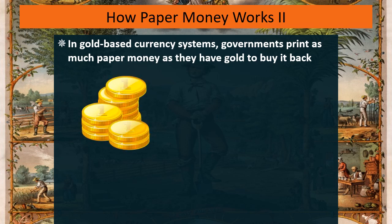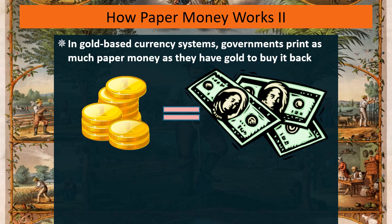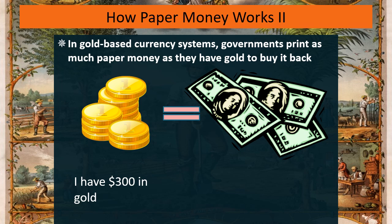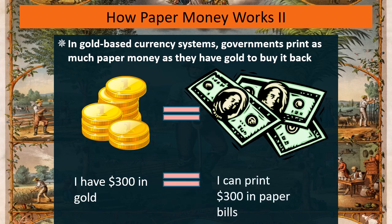An amount of gold is equal to so much paper money, and that really doesn't change in value as long as you don't lose any of this gold or somebody doesn't steal it. So $300 in gold gets you $300 in paper bills, as long as you have enough gold to back up those bills.